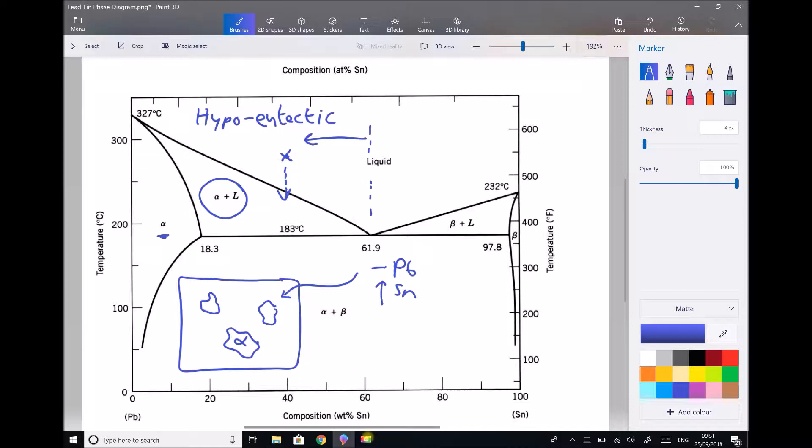So the percentage of tin is going to increase in the liquid above 40%. Well this is going to continue because if we keep cooling this, then our areas of solid alpha are going to increase.